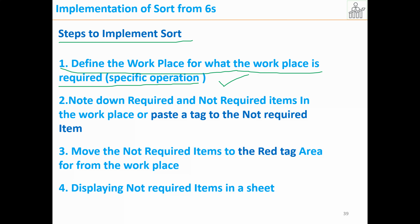What type of specific operation are you doing in that particular department or area? We need to specify it. Once you specify it, we need to note down the required and not-required items in the workplace, or paste a tag to the not-required items. We note down all the items by name and then paste a tag to the not-required ones.